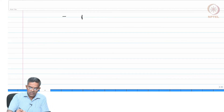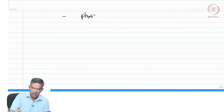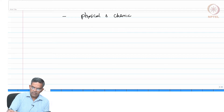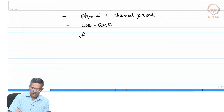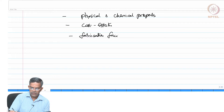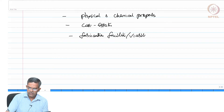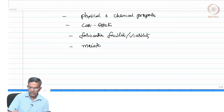ABS further emphasizes physical and chemical properties, cost-effective fabrication and construction facilities, viability of fabrication, and most importantly, the maintenance cost.